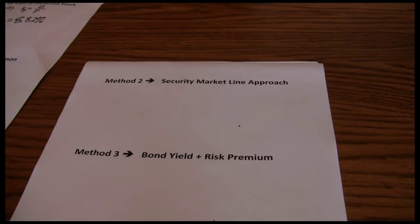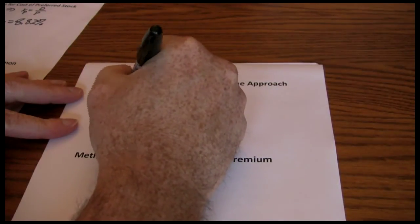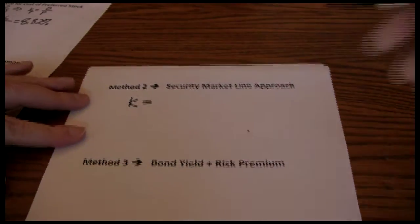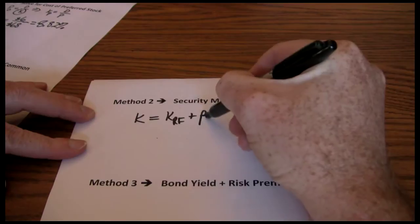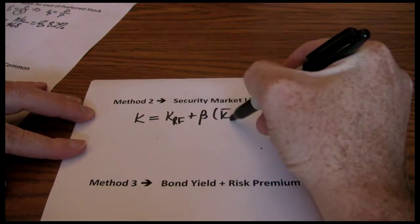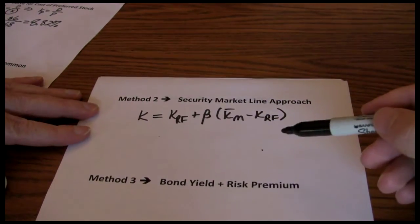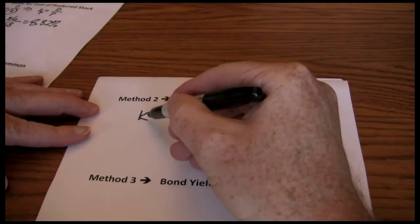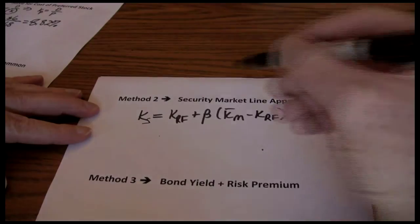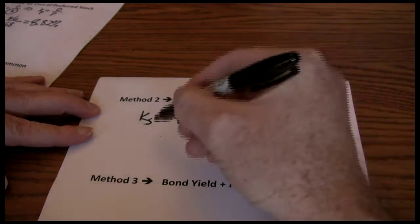Our backup approach is the security market line, which we introduced in our chapter on risk and return. The security market line says the required return is equal to the risk-free rate plus beta times the expected return on the market minus the risk-free rate. Remember, the required return for investors is the cost of capital for the company. So this required return for stockholders gives us the cost of common stock financing for companies using the security market line approach.